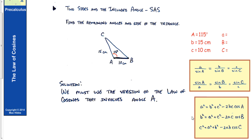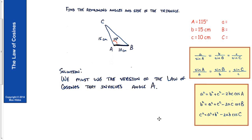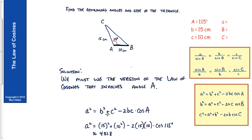We know angle A, side B, and side C, so we'll use the corresponding version of the law of cosines to find side A. We substitute our values: B is 15 and C is 10, and of course the angle A is 115 degrees.